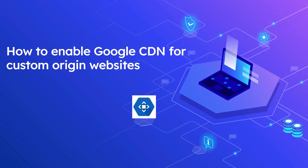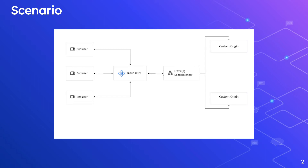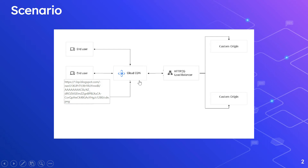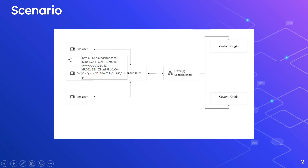Let's look at how the scenario is going to work. The end user connects to Google Cloud CDN, so all traffic goes via Cloud CDN. Cloud CDN in turn connects to the HTTP or HTTPS load balancer based on our configuration. The load balancer then connects to the custom origin — in our case, an Apache server running on port 80 — which in turn connects to the AEM server. Finally, the content is sent to the end user.